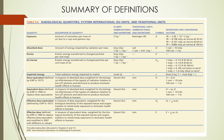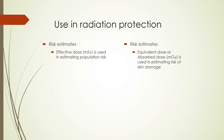This table is a summary of the definitions we have learned so far. We have the quantity listed, the SI unit, and the traditional unit. The symbol is given as well as a conversion between the traditional unit and the SI unit. We learned about equivalent dose and effective dose in the previous slides, as well as the absorbed dose to tissue. We can use this information now in radiation protection for different situations.